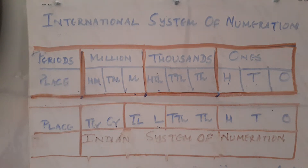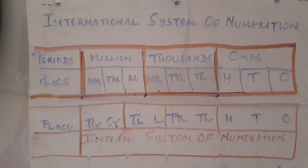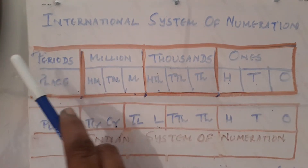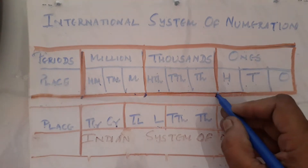Hello friends, let us see the international system of numeration today. See the chart given here. Any 9-digit number you can write using this international system of numeration chart. In this system, each period is separated by a comma. When we move from right to left, after each 3 digits, we have to insert a comma.